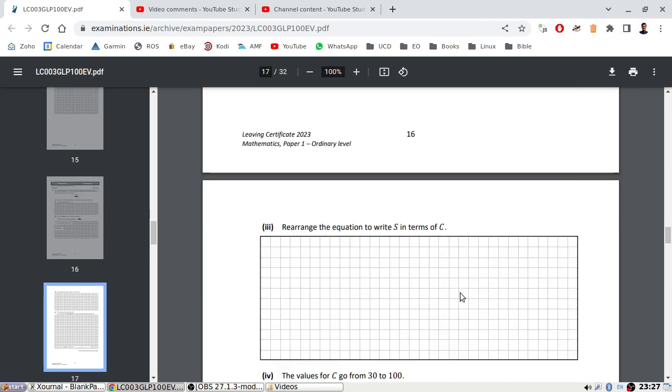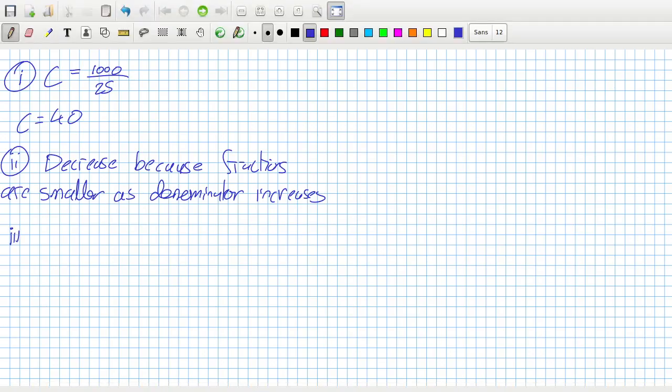Rearrange the equation to write S in terms of C. So C equals 1000 over S plus 10. Cross multiplying, we get S plus 10 equals 1000 over C, so S would be 1000 over C minus 10.